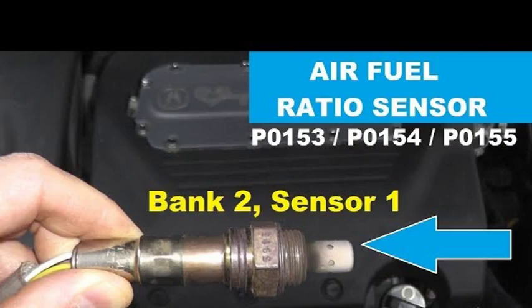The P013C code can cause various symptoms, including: an illuminated check engine light, poor fuel economy, rough idle, hesitation or stalling, and increased emissions. If you are experiencing any of these symptoms, it is important to have your vehicle diagnosed by a qualified mechanic, who will be able to determine the underlying cause and recommend the appropriate repairs.